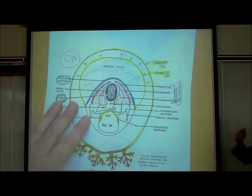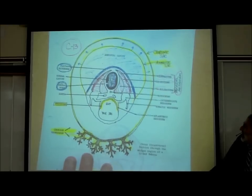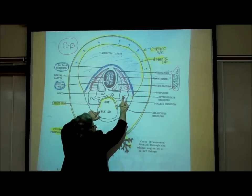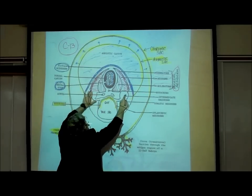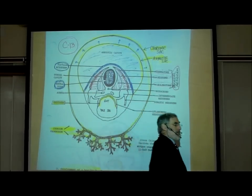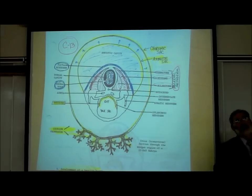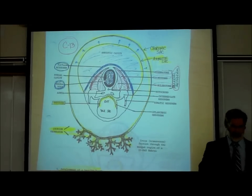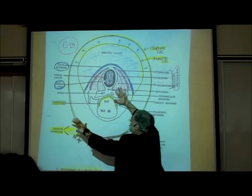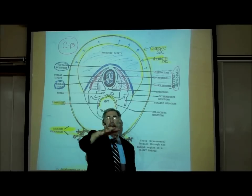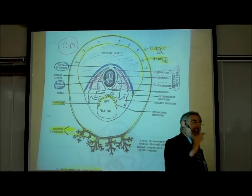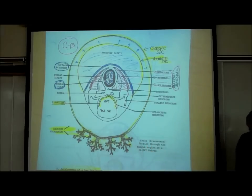The intermediate mesoderm is labeled right here on both sides — that's going to become the urogenital system. All of what these things are becoming is summarized on the lower half of C19, which you should try to know. Urogenital means urinary — like the kidneys — and genital, meaning the reproductive system, because the urinary and reproductive systems develop from a common area.